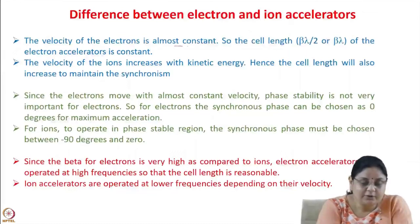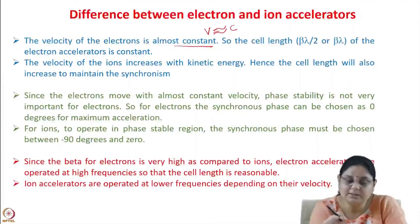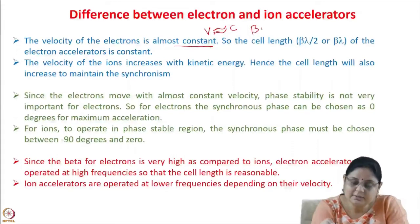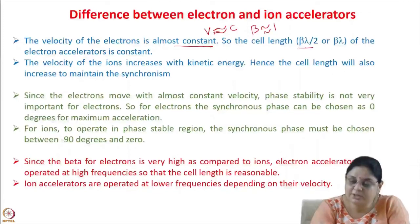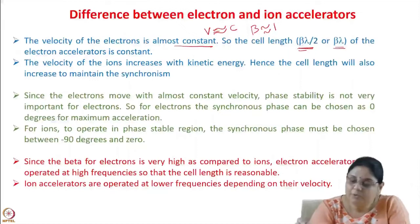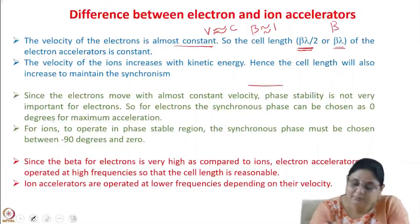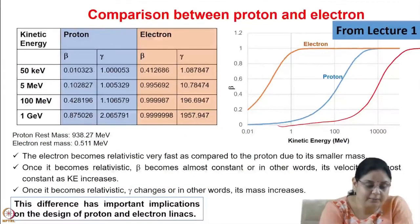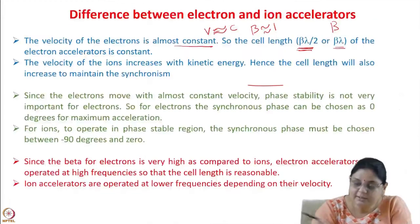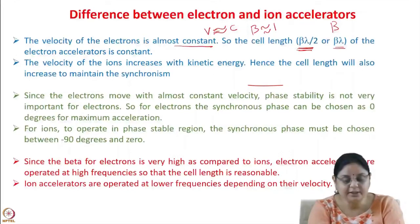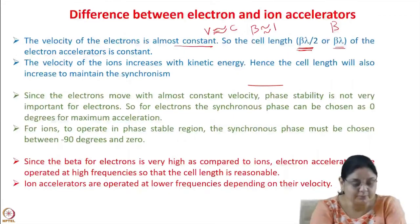For electrons, velocity is almost constant — v ≈ c, so β ≈ 1. The cell length (β·λ/2 for π-mode or β·λ for 0-mode) is therefore constant for electron accelerators since β is constant. For proton accelerators, β is increasing as the kinetic energy increases, so the cell length must also increase to maintain synchronism.